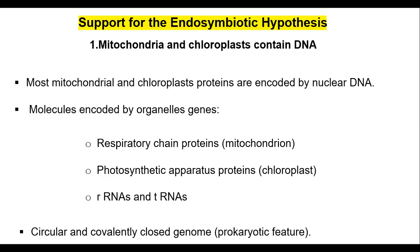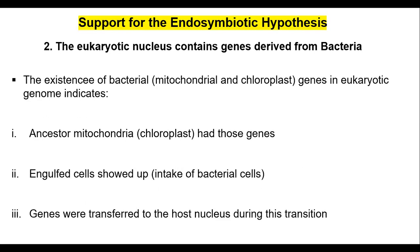The second major reason is that the eukaryotic nucleus contains genes derived from bacteria. The existence of mitochondrial, chloroplast, or bacterial genes in the eukaryotic genome indicates that their ancestors — mitochondria and chloroplasts — had those genes, which were then transferred to the nucleus during transition. This wouldn't be called horizontal gene transfer, but there is an exchange of genes. It's a source of genetic diversity, and this type of transfer still occurs today.